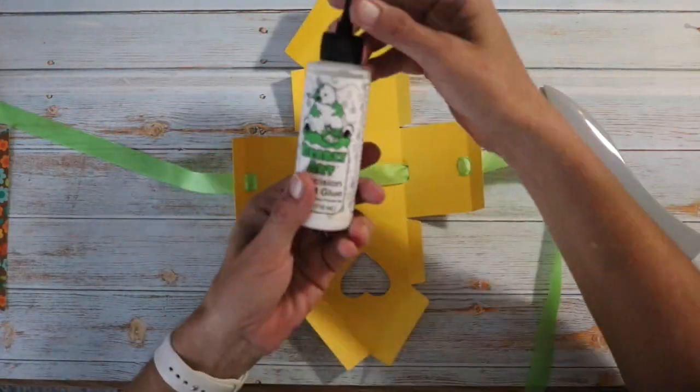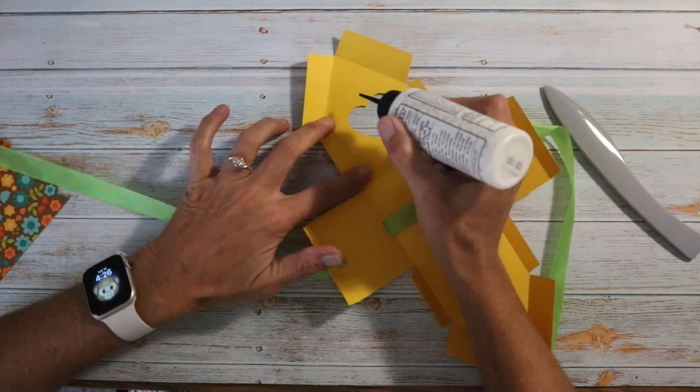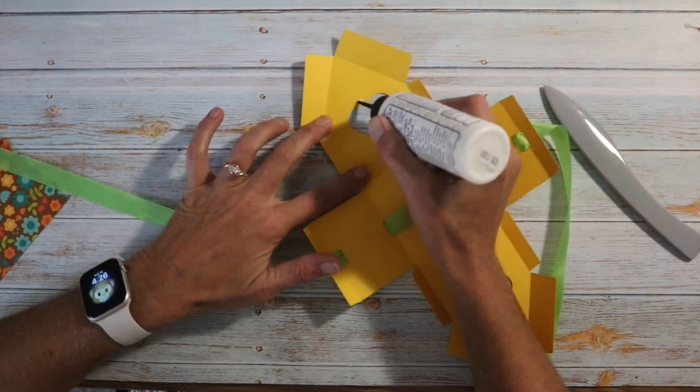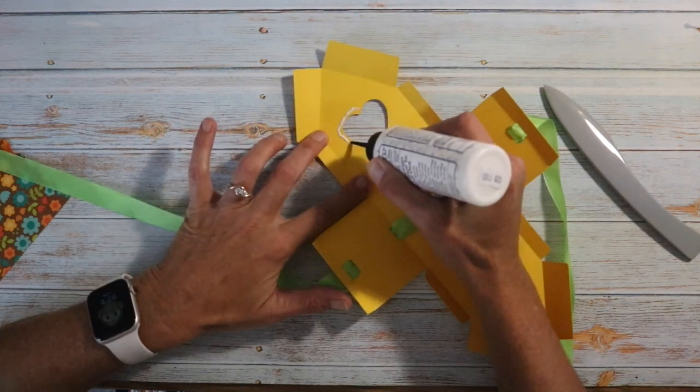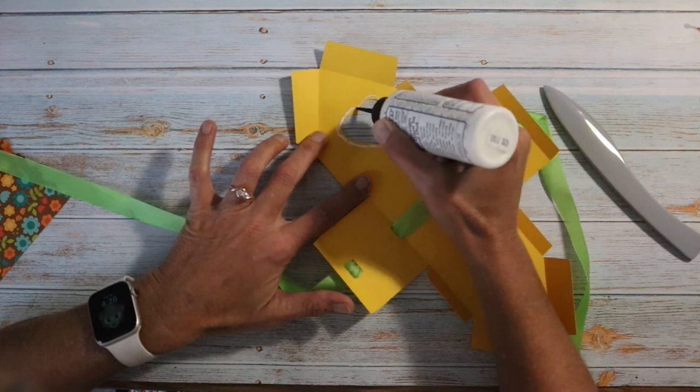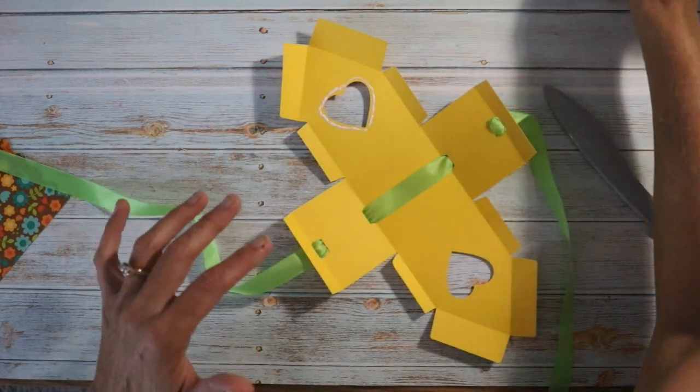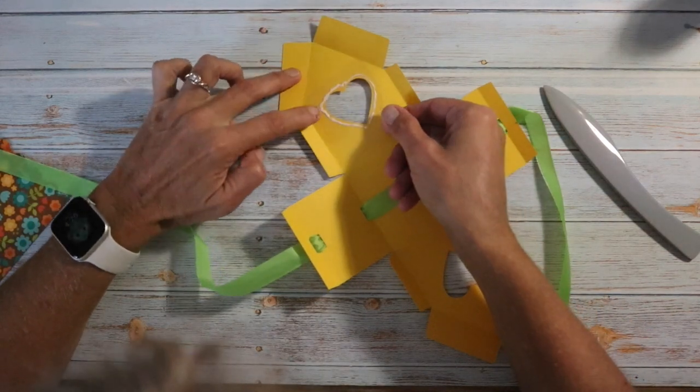Now let's work on the little acetate window. So I'm using Barely Art glue, and I'm just taking a little smidgen and going right around the heart cutout, going as close as possible. Then take our piece of acetate or a plastic baggie, whatever one you're using, and plop that on there.